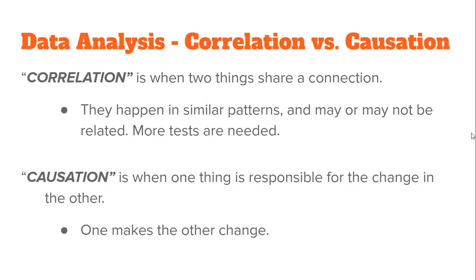Besides looking at large data sets, when we look at data and patterns we're really examining either correlation or causation. Correlation is when two things share a connection — they have similar patterns and may or may not be related, and we need more tests to be sure. If there's enough information, we move to causation, where we say one thing is directly responsible for changing the other — one causes it to happen. This can be a difficult concept, so let's look at some extreme examples.